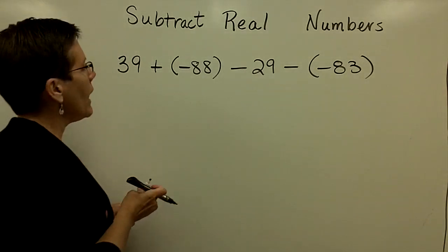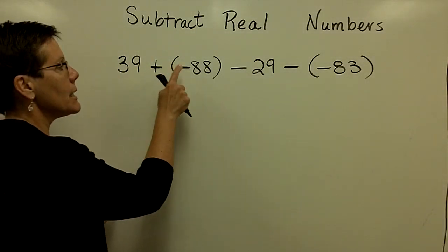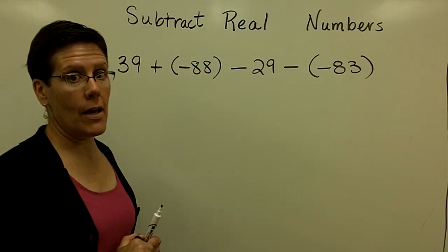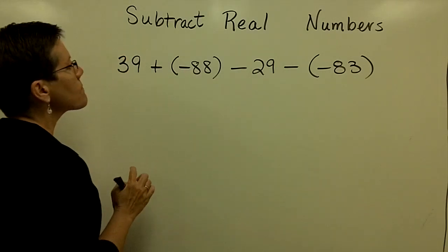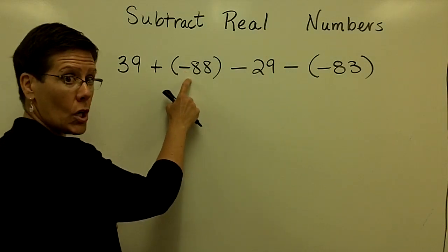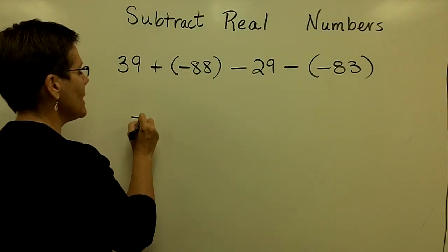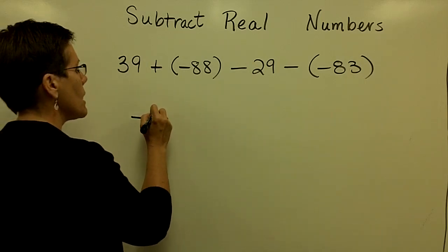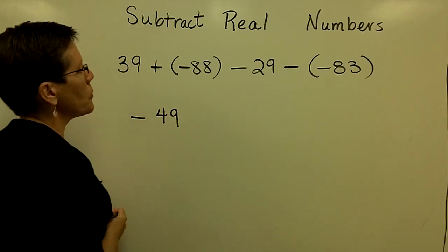So first, let's go ahead and take this positive 39 and this negative 88 and add them. So they have opposite signs. So I have to subtract their absolute values. This one has more pull. So my answer is going to be a negative. And it looks like it's going to be a negative 49.